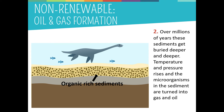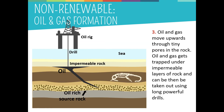Over millions of years, the organic-rich sediments became buried deeper and deeper as layers of new sediments piled on top. As they were buried, heat and pressure rose, turning the microorganisms into oil and natural gas. Oil and natural gas are lighter than the surrounding rock, so once they form they move upwards through tiny pores and structures in the surrounding rock.